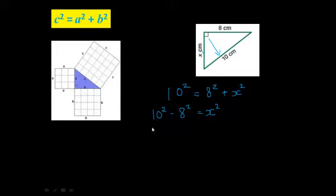And we work out what X is the way we normally would. So 10 squared is 100, because 10 times 10 is 100. 8 squared is 64, because 8 times 8 is 64. And that's going to be equal to X squared.